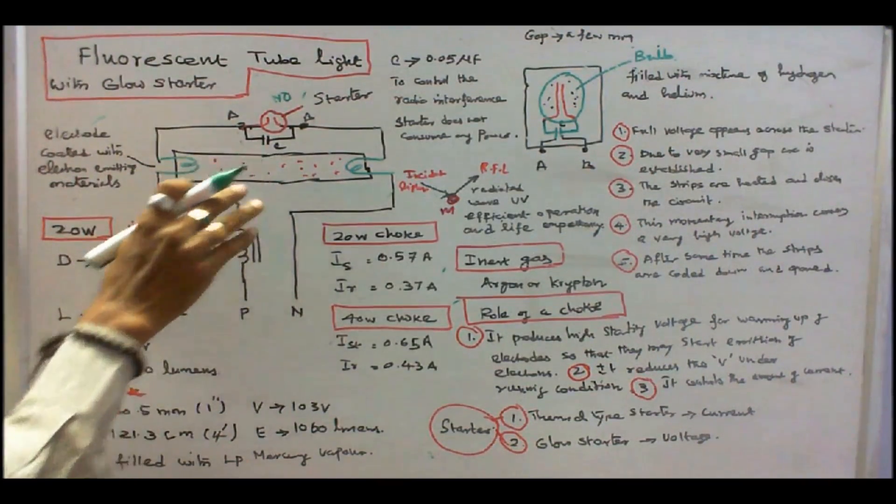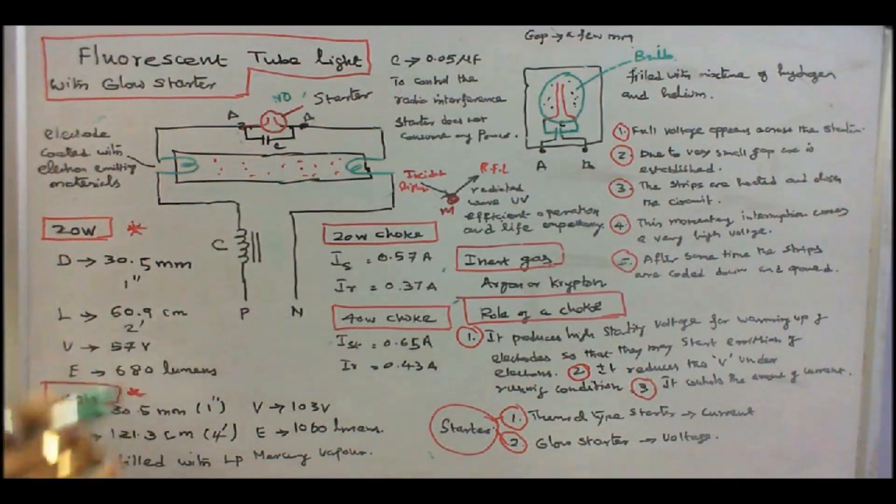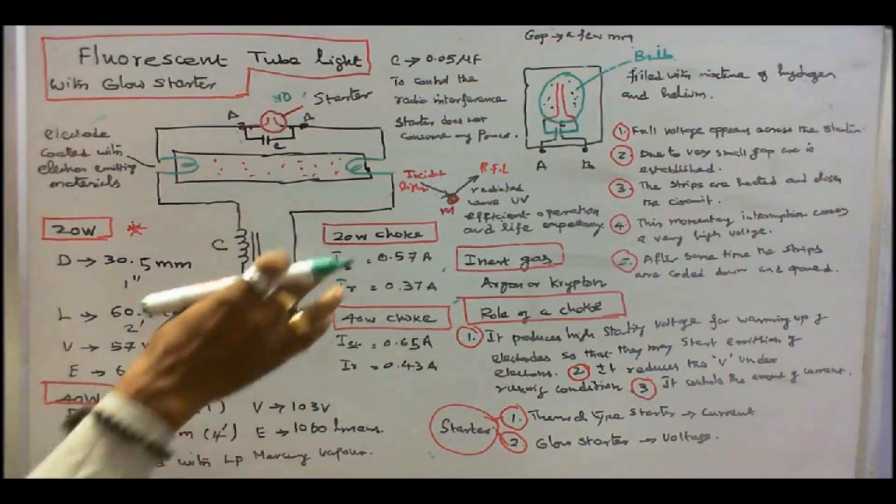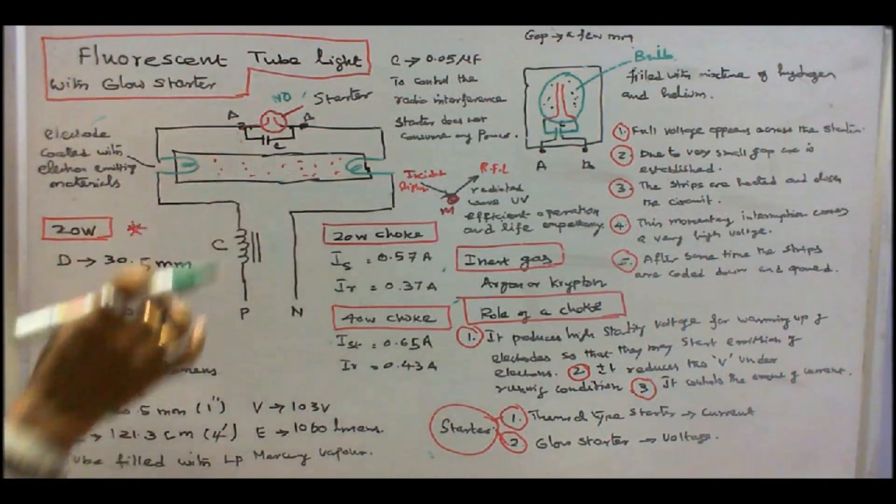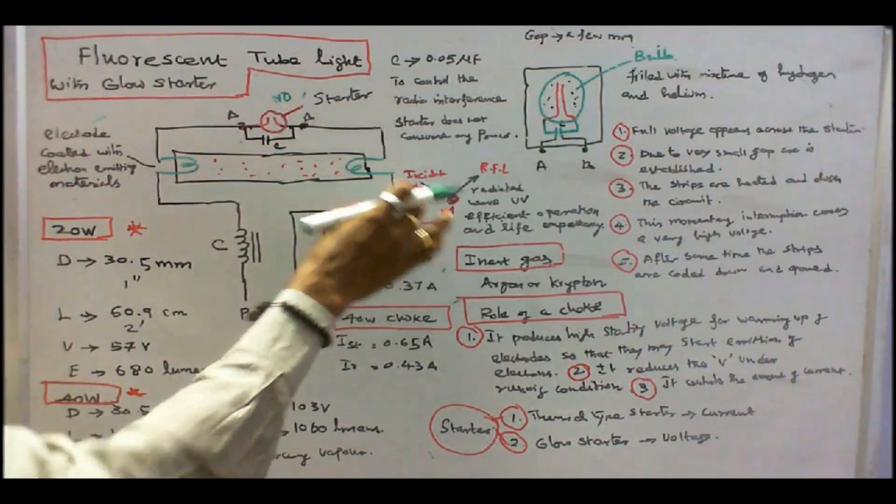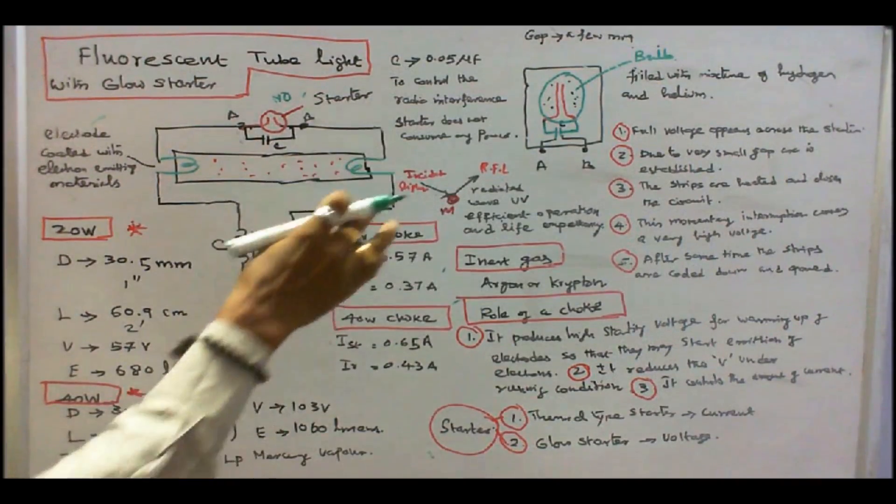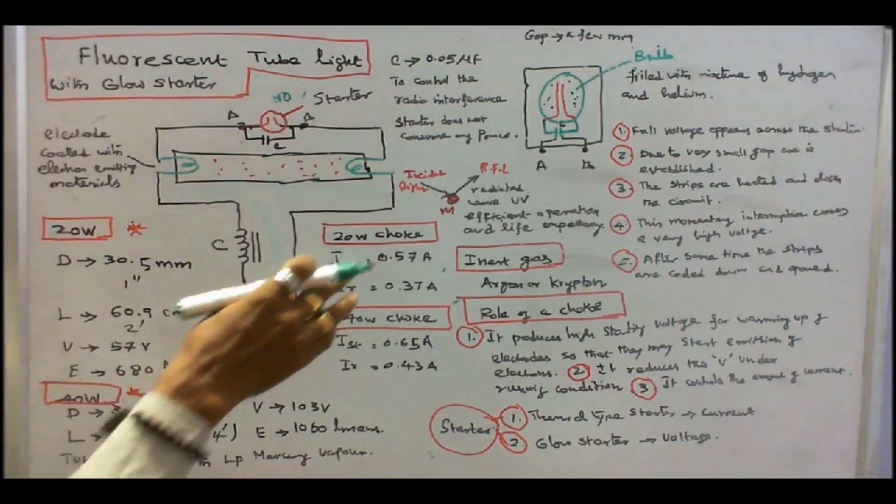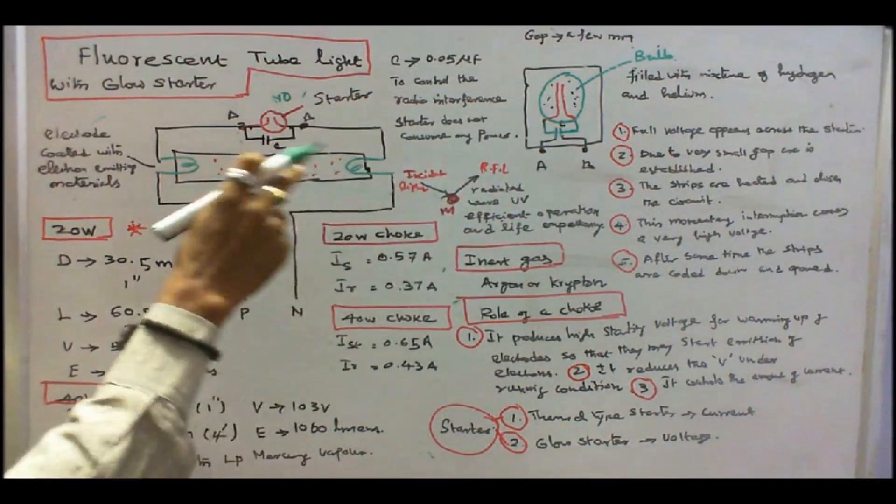Tube light is the major component. The tube light is filled with the inert gas because it is a low-pressure mercury vapor lamp type. It is a low-pressure discharge lamp. The inert gas argon or krypton plus few drops of mercury is used with some pressure inside the tube light. Why we are using mercury? When a light falls on mercury, it reflects ultraviolet. And to improve the efficiency of the operation and the life expectancy, we are using mercury.